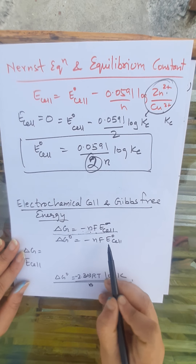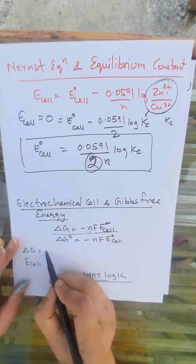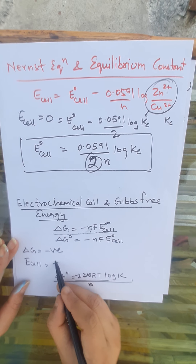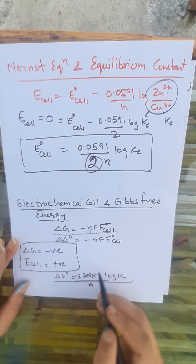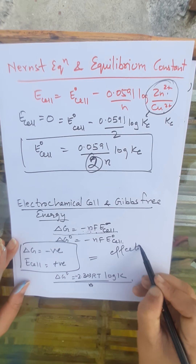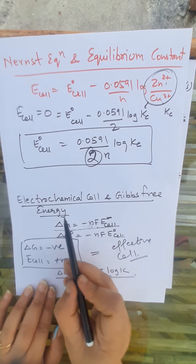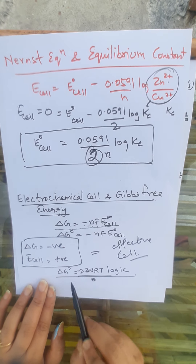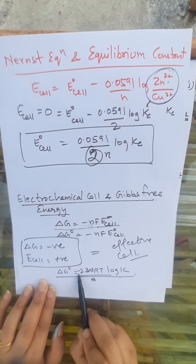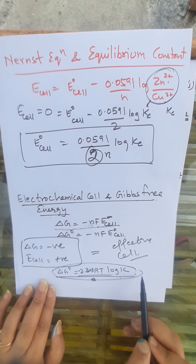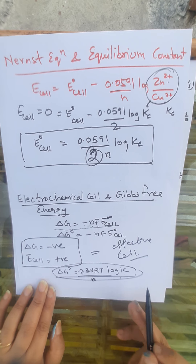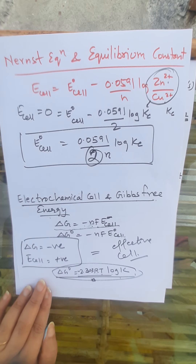Further, for electrochemical cells and Gibbs free energy: ΔG = −nFE(cell), where n is the number of electrons, F is Faraday's constant, and E is the cell potential. Under standard conditions, ΔG° = −nFE°(cell). For any electrochemical cell to be functional, ΔG must be negative and E(cell) must be positive. Relating Gibbs free energy to the equilibrium constant: ΔG° = −2.303RT log K. Thank you.